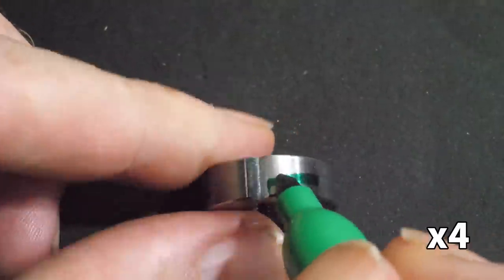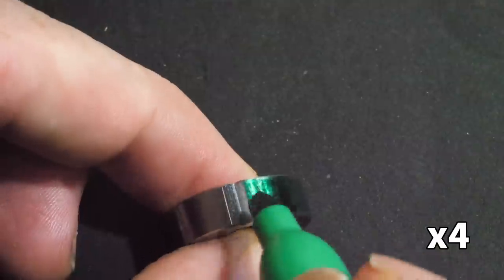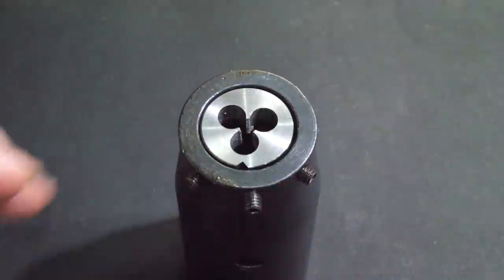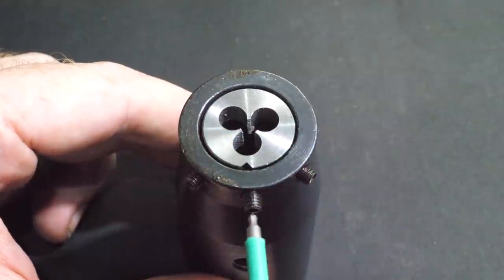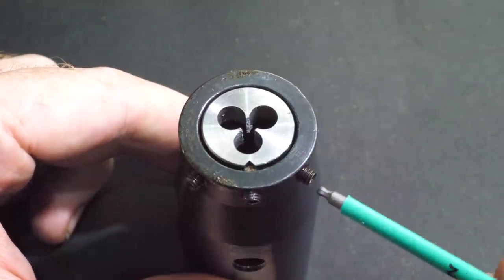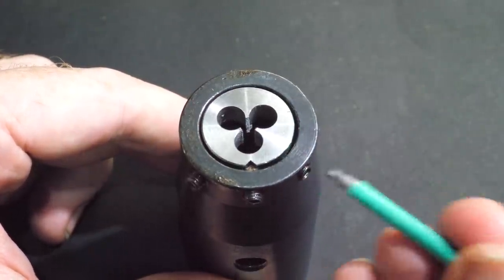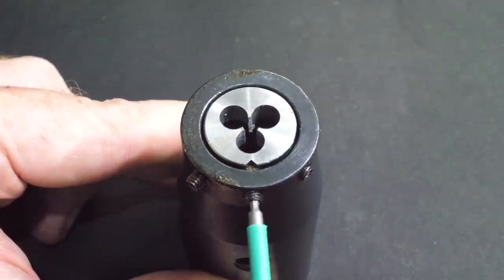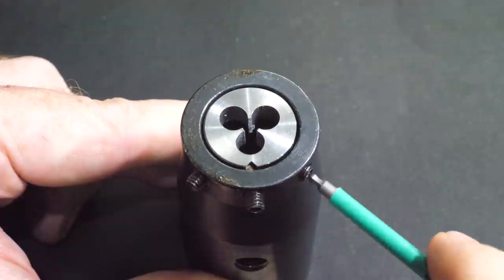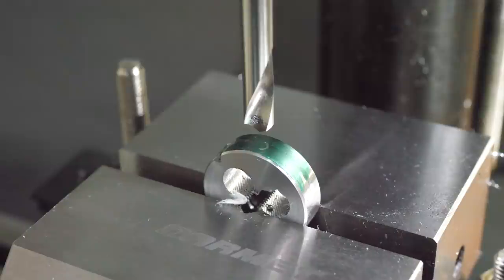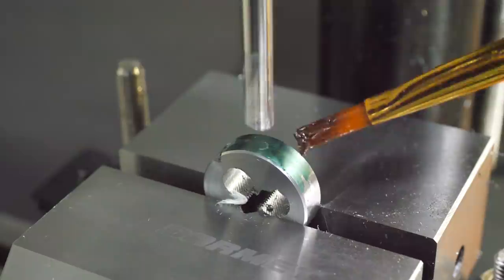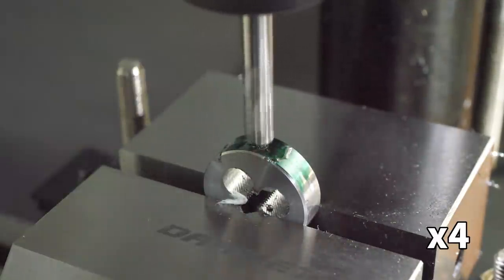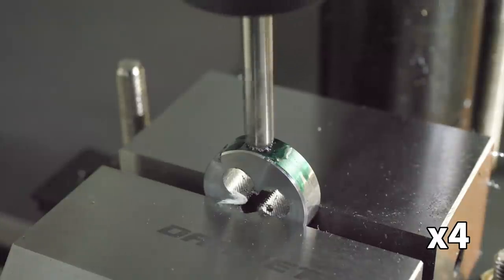Dies also need two detents cut either side of the groove for retaining screws that hold the die in place while cutting. To quickly mark the right location I coloured the outer surface with a Sharpie, put the die in a holder, and tightened the retaining screws to make a mark at the correct position. The detent only needs to be deep enough for the tip of the retaining screw to align with, so I used the starter drill again.